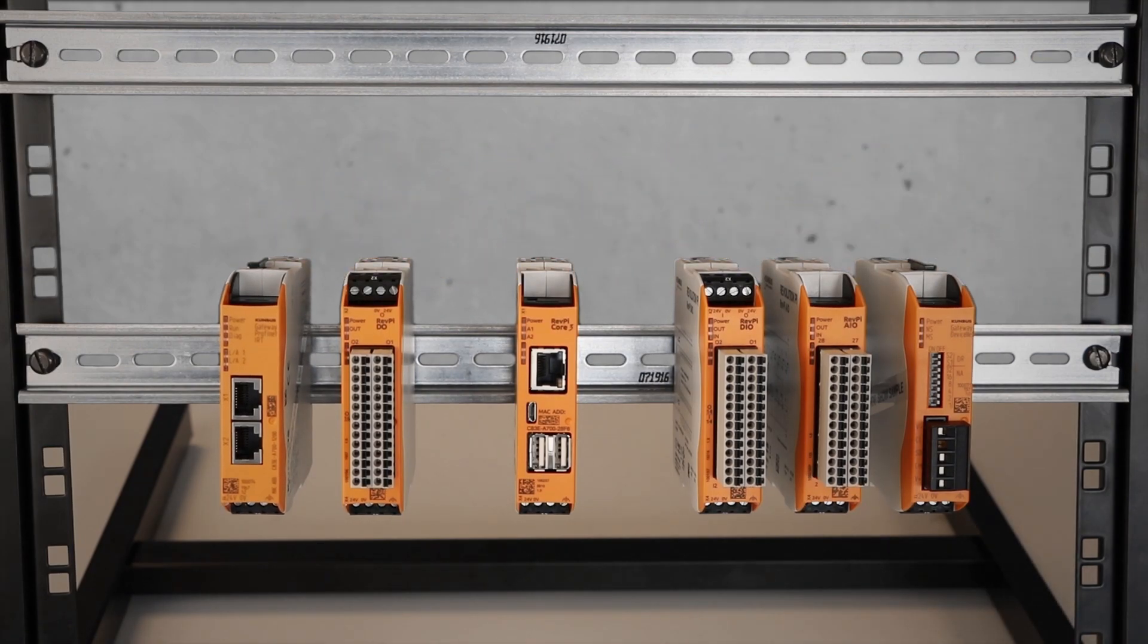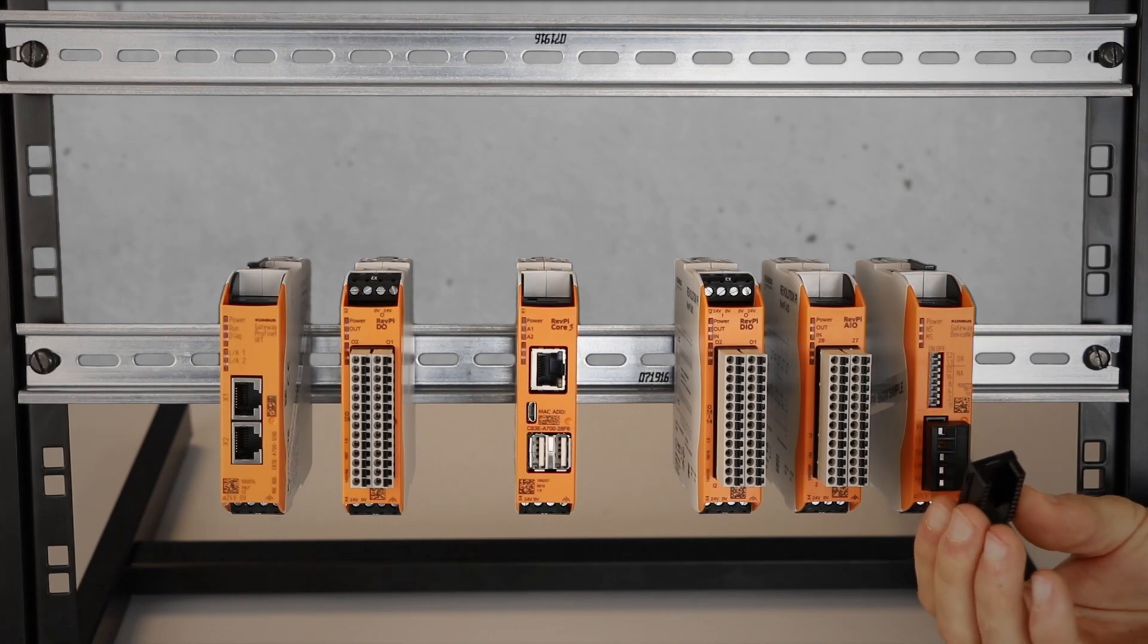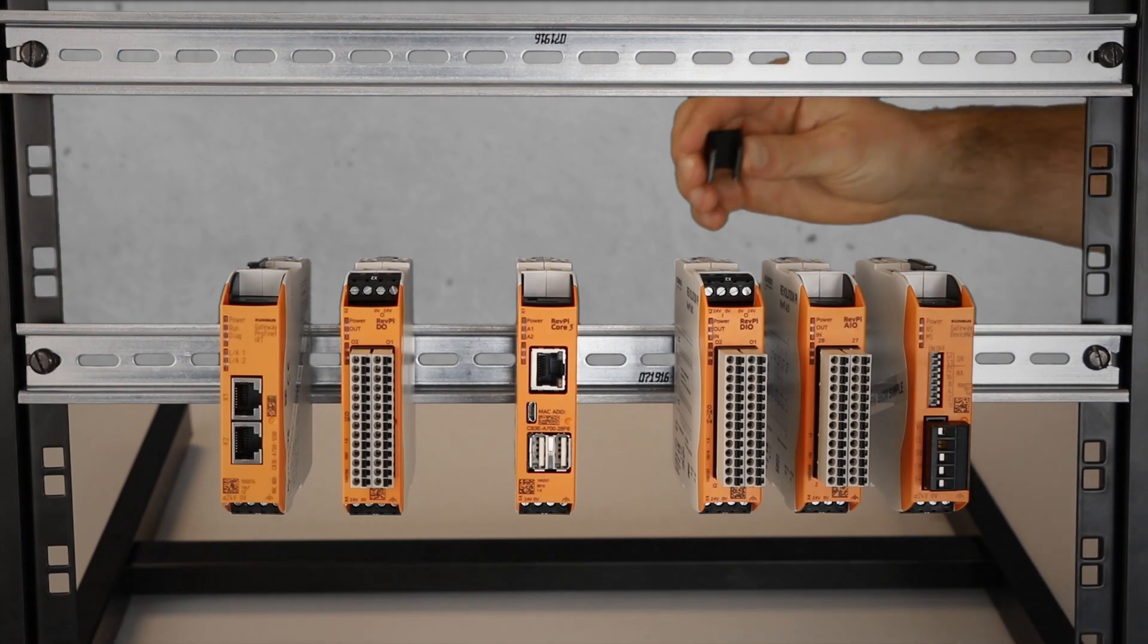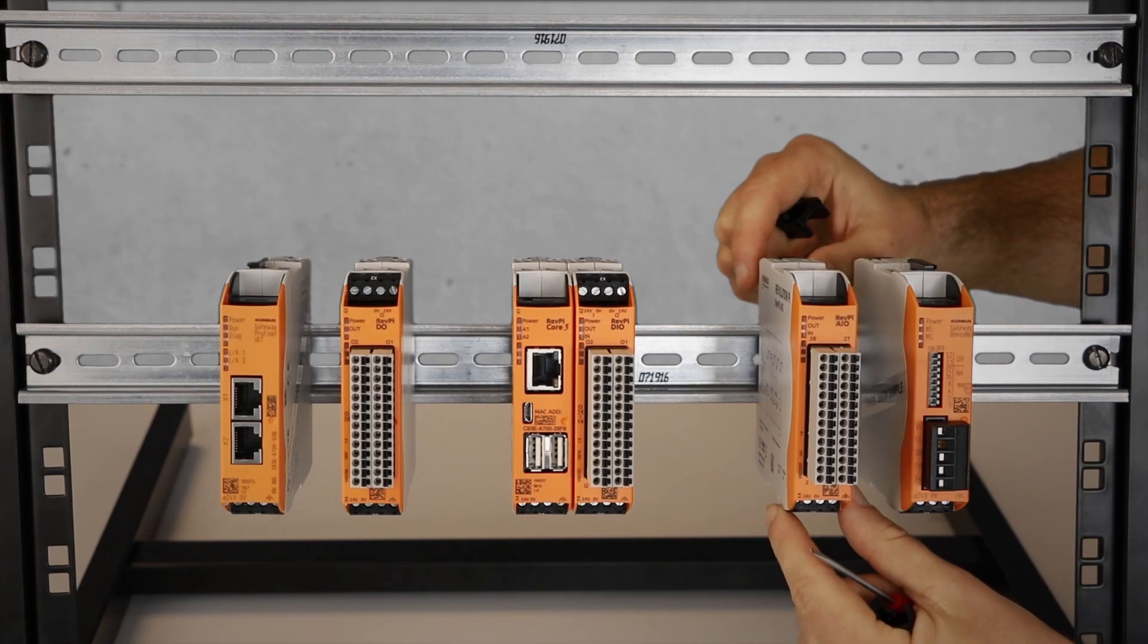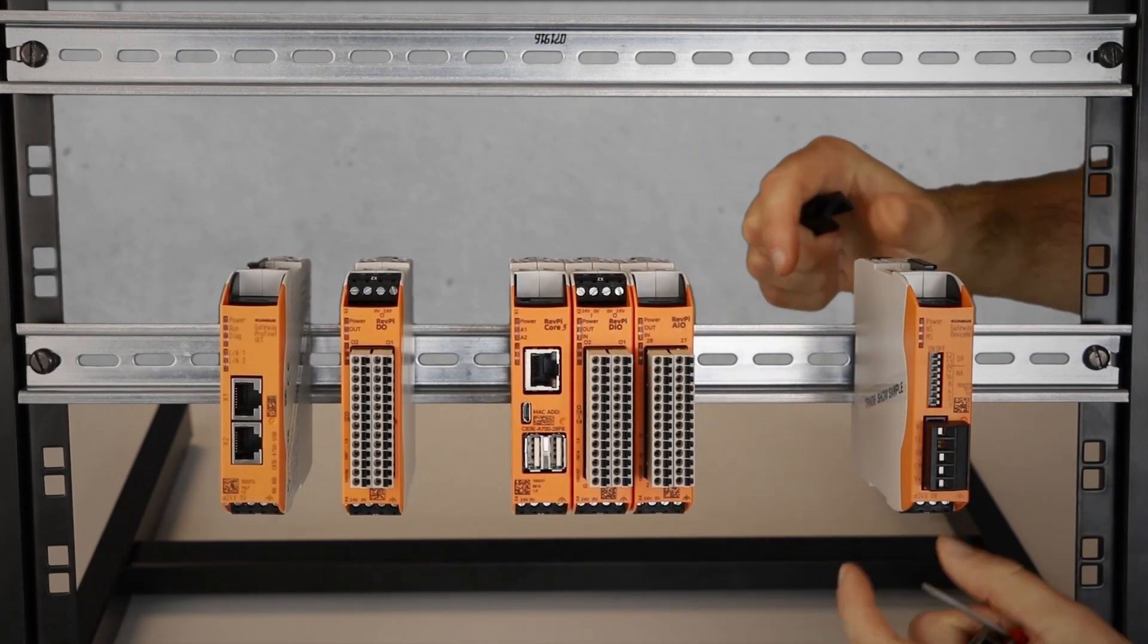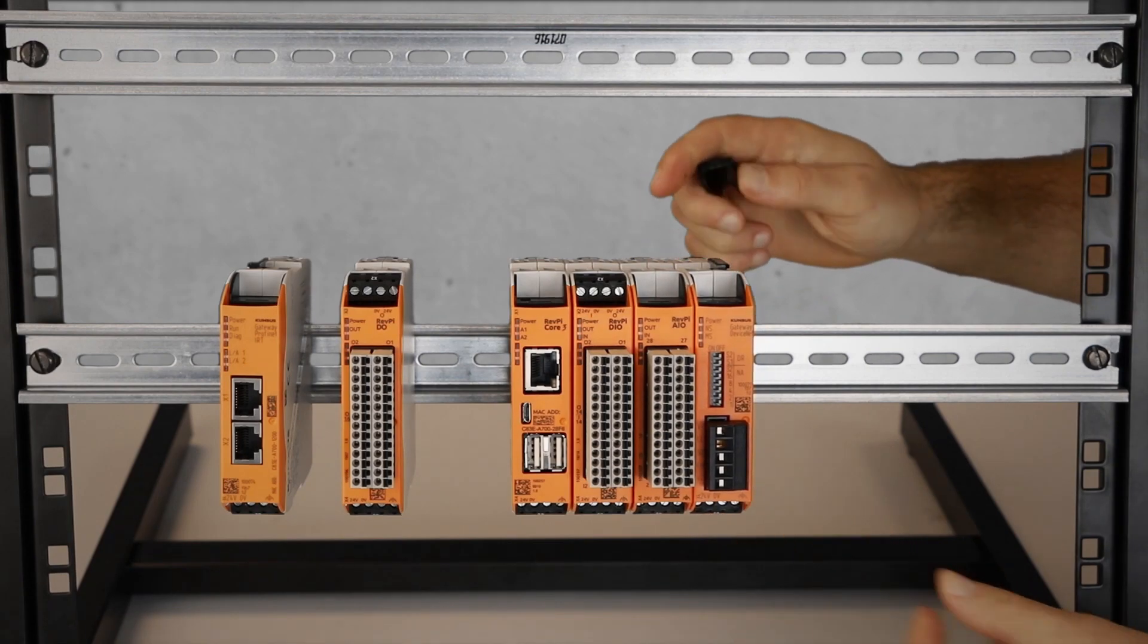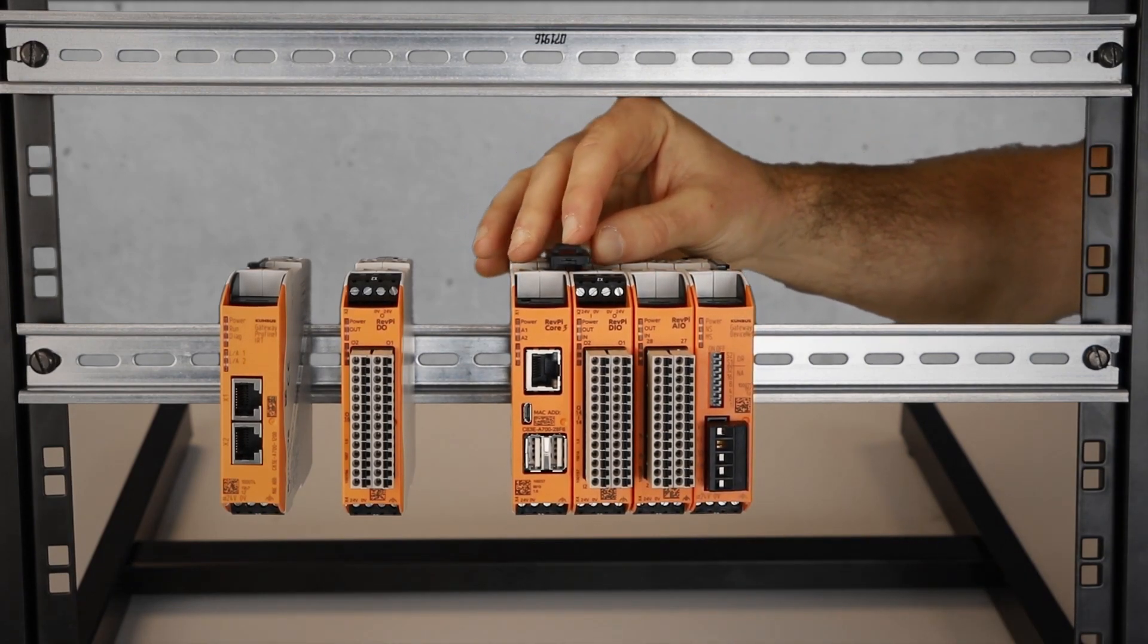Now I connect the modules via the black colored Pi bridge. Starting from the base module, I'm connecting the digital I/O card and the analog I/O card, as well I'm taking the gateway Device Net. So I'm taking the Pi bridge and plugging it in.